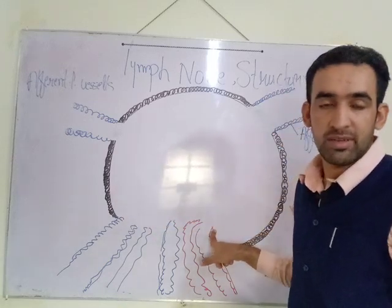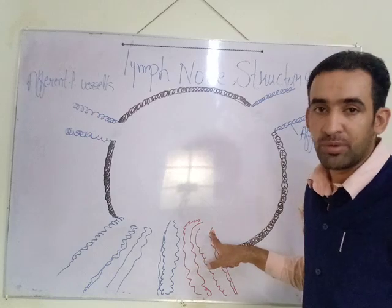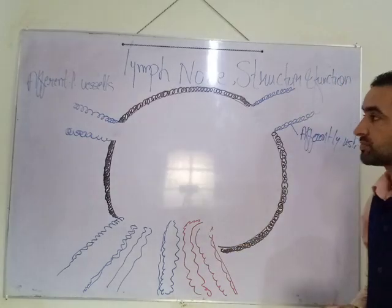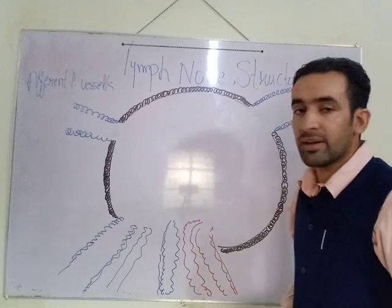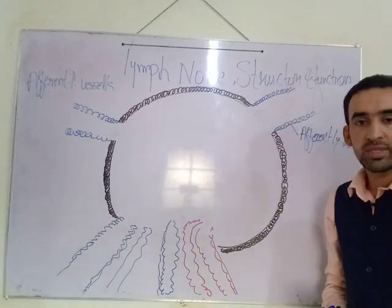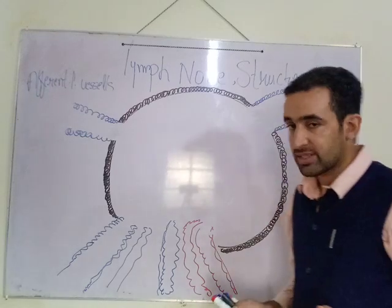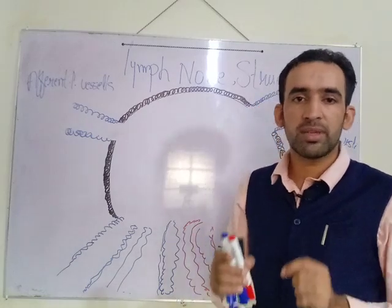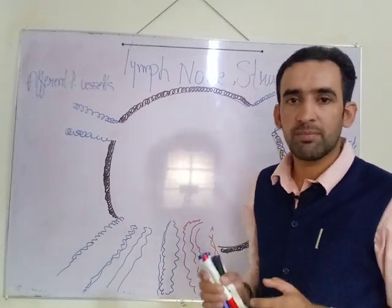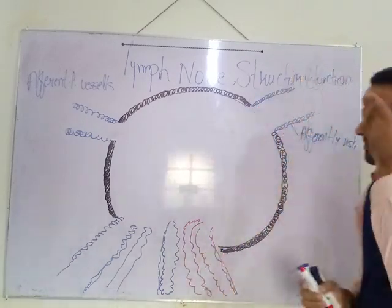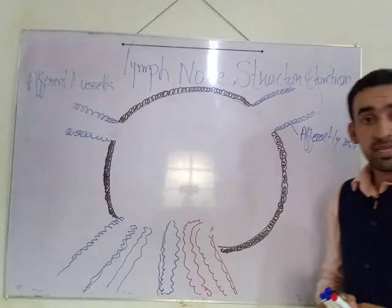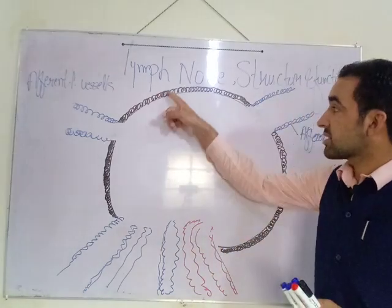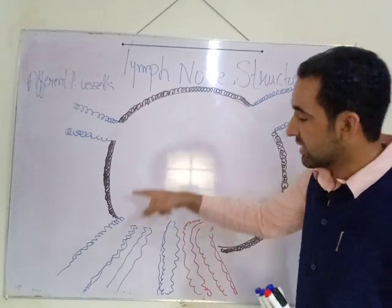So up to now we have learned about the lymph node: it is a small encapsulated bean-like structure present throughout the flow of lymph fluid. It has one concave surface and one convex surface. The outer surface is called the cortex and the inner part is called the medulla of the lymph node.